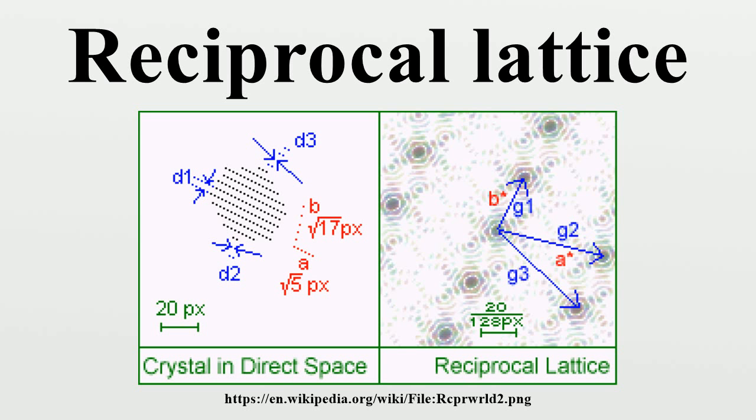We let R be a vector in the direct lattice which we can express as a linear combination of its primitive vectors. From this we can see that G · R satisfies the identity.